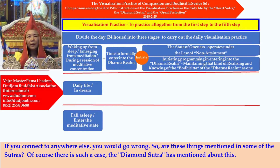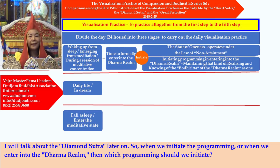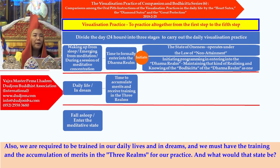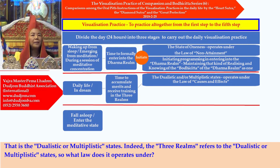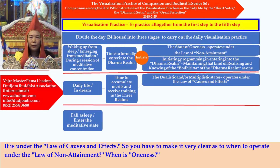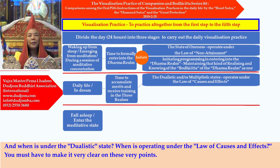One important point is that you have to visualize all-pervasive — you have to restore all to become oneness with a single point only, and please do not make any other connections. If you connect to anywhere else, you would go wrong. Are these things mentioned in the sutras? Of course — the Diamond Sutra has mentioned about this. When we initiate the programming or enter into the Dharma realm, we are required to be trained in our daily lives and in dreams, and must have the accumulation of merits in the three realms. That is the dualistic or multiplistic state, which operates under the law of causes and effects.